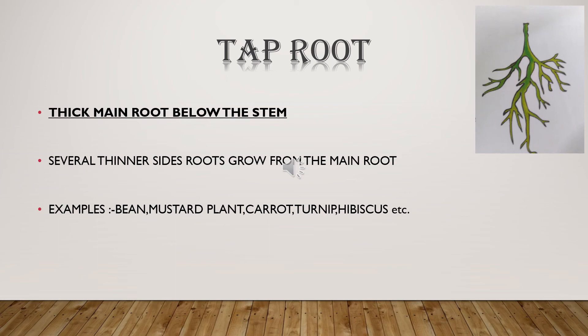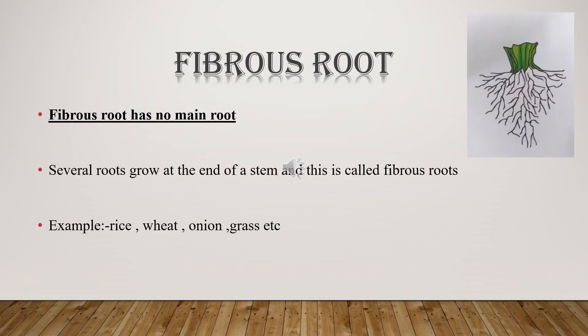Now let us discuss the second type of root: fibrous root. It has no main root; many tiny, thin roots grow out from the base of the stem. As you can see in the picture, there is no main root and the thin roots come out in a bunch form from the base of the stem. Some examples are rice, wheat, onion, grass, etc. These are called fibrous roots.